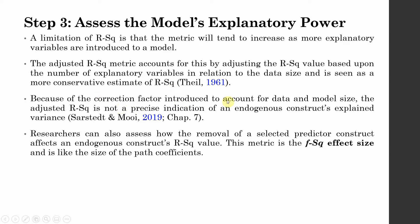Because of the correction factor introduced to account for data and model size, the adjusted R-square is not a precise indication of an endogenous construct's explained variance. So what's the solution? In this case, researchers are asked to assess the F-square effect size, which is like the size of the path coefficients.